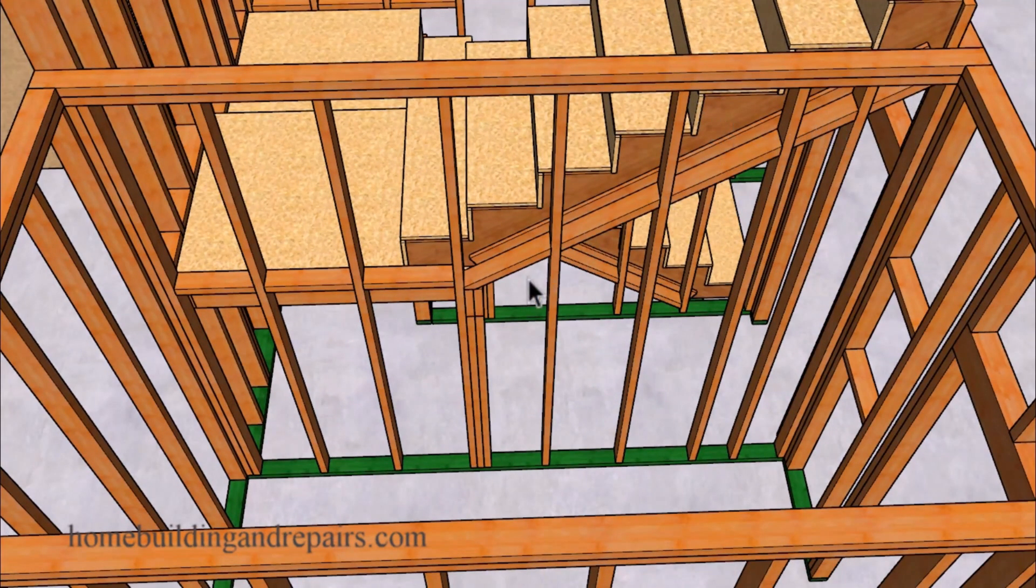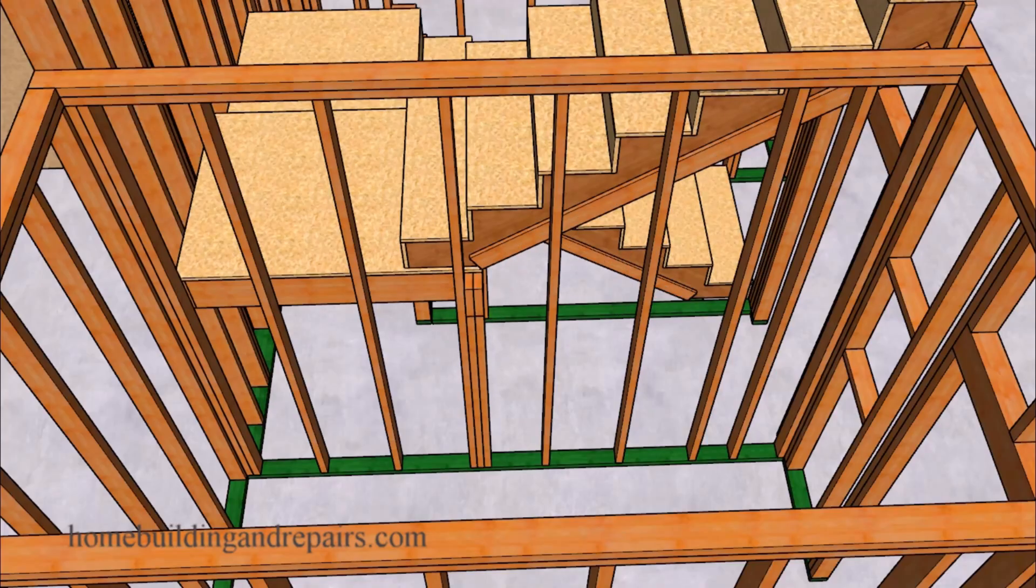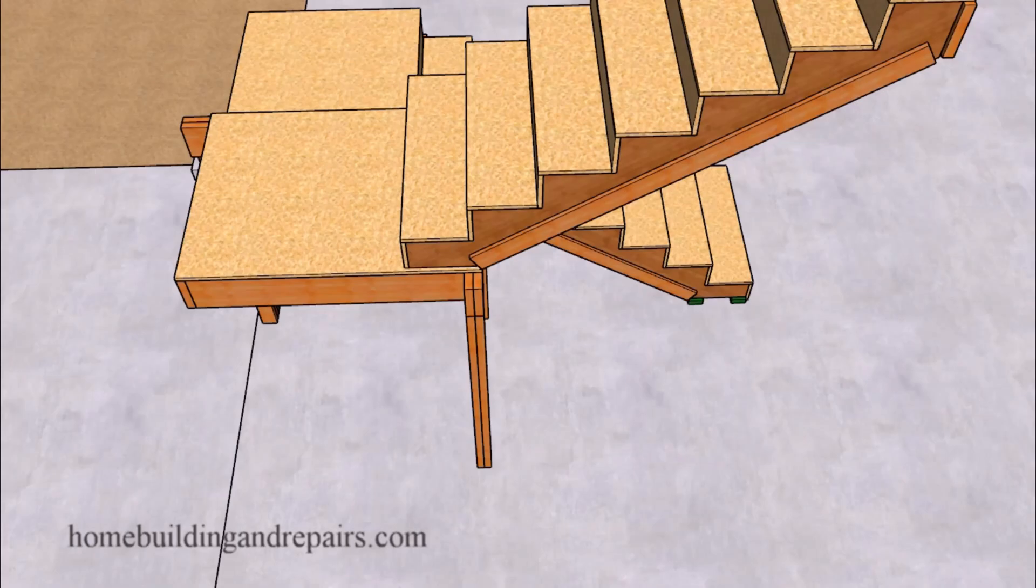Again our fire blocks along with some support studs for our landing joist. Next up let's remove the wall framing so that we can get a better view of just the stairway.